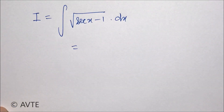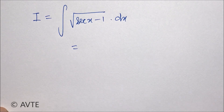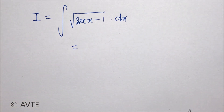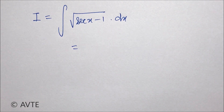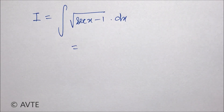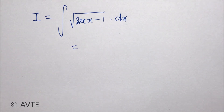We'll solve the integration of √(sec x − 1). The approach is to write sec x as 1/cos x, take the LCM, and then the numerator can be put into the half-angle form.